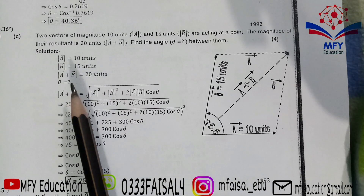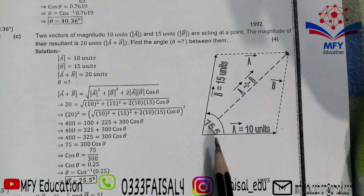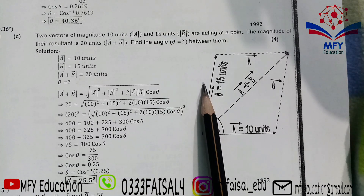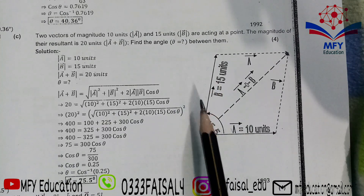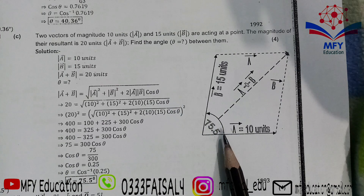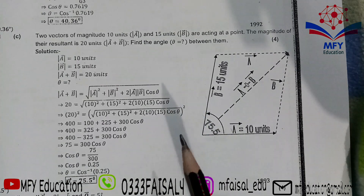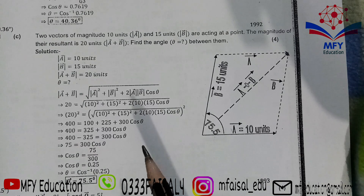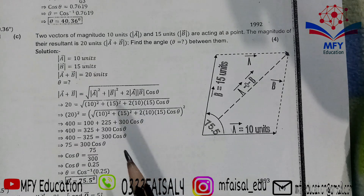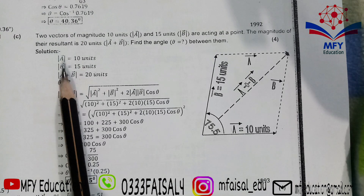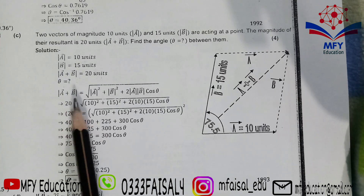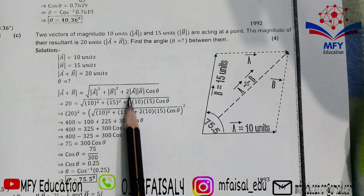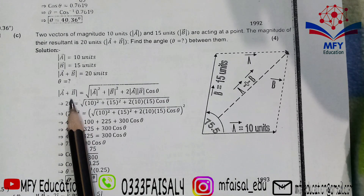You have to find the angle between vectors a and b. Using the parallelogram law, the formula for |a+b| is: |a+b| = √(|a|² + |b|² + 2|a||b| cos θ). Substituting: 20 = √(10² + 15² + 2×10×15×cos θ).